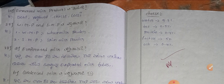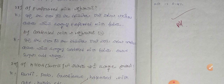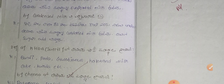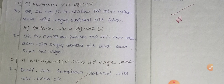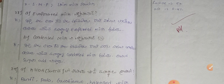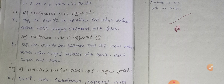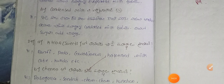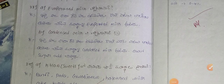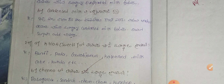Fermented milk products include Dahi, Yogurt, and Cheese. WMP and SMP — skim milk. Evaporated milk and condensed milk — to make condensed milk, you add sugar to evaporated milk.